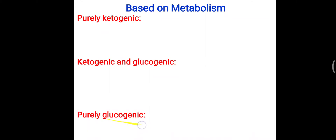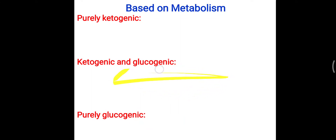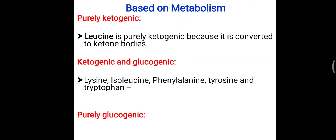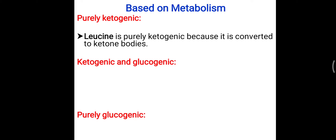There are three simple categories to remember: ketogenic, glucogenic, and both ketogenic as well as glucogenic. Some amino acids are diverted to only ketone body formation, some to make only glucose molecules. The purely ketogenic amino acid is leucine — it makes only ketone bodies: acetoacetate, acetone, and beta-hydroxybutyrate.